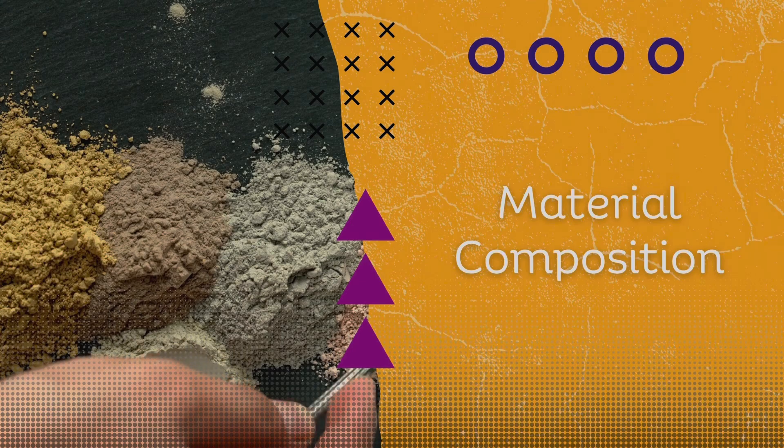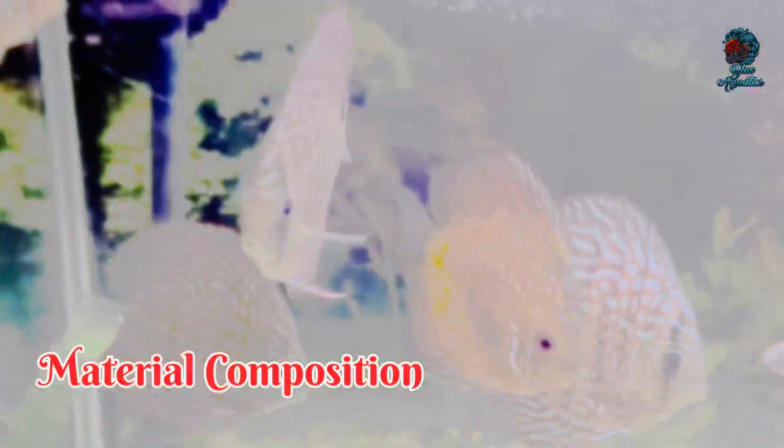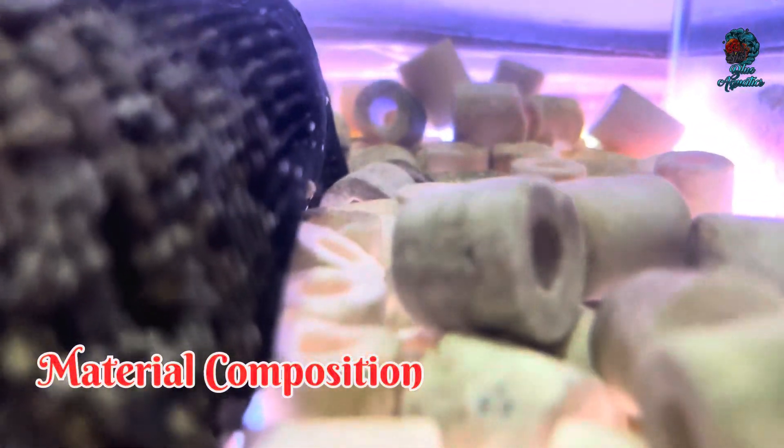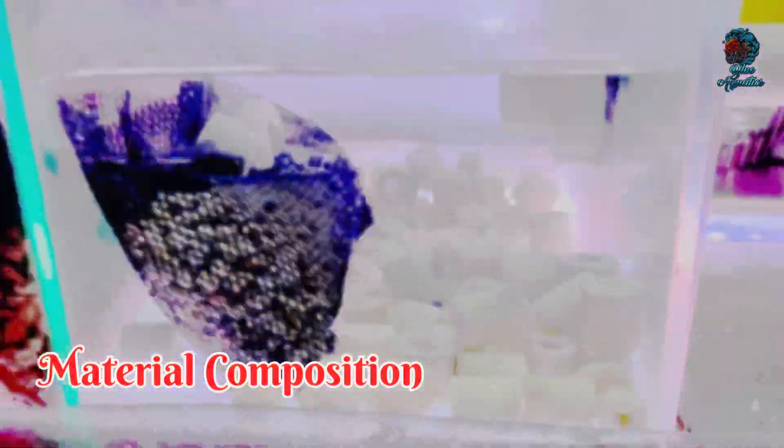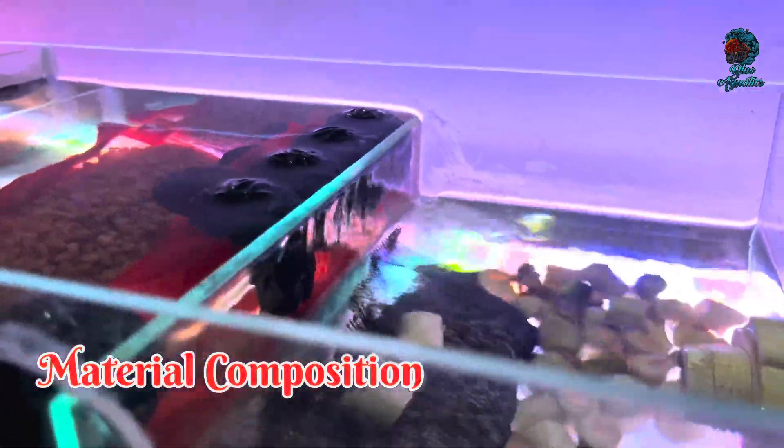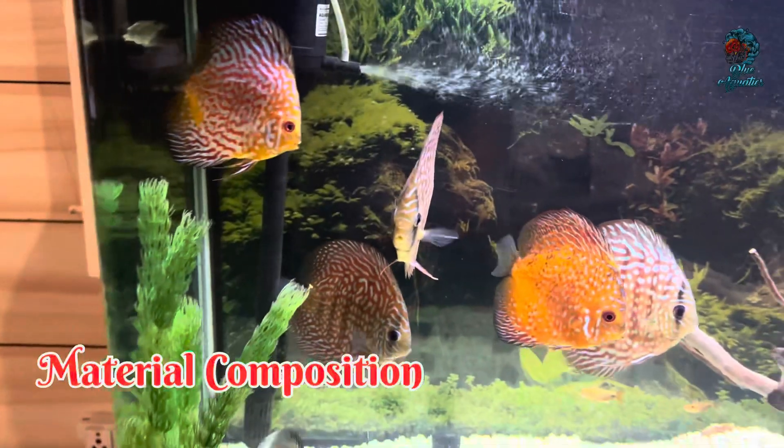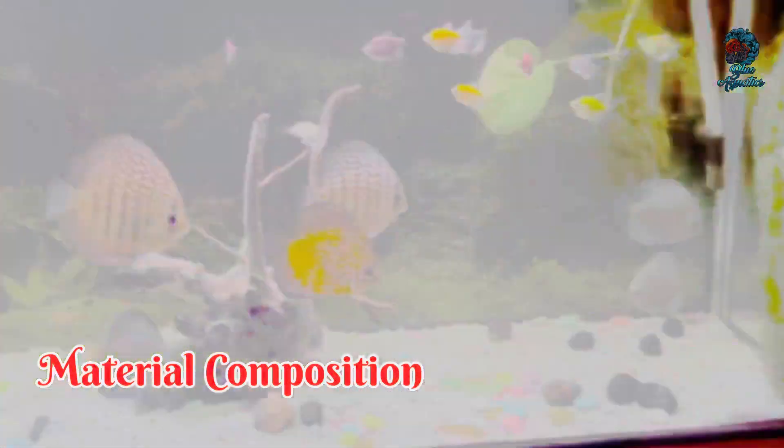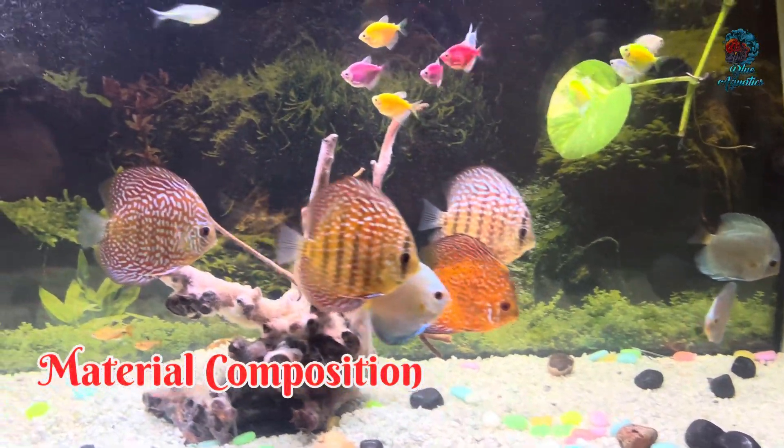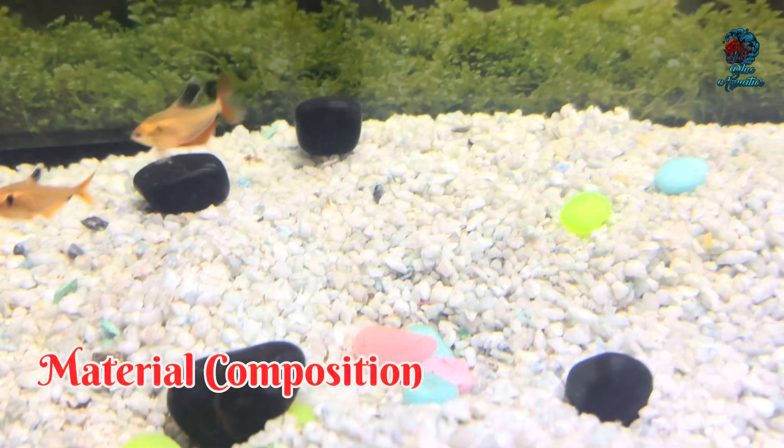Material composition. Another important factor is the material composition of ceramic rings and tank stones. Ceramic rings are typically made from sintered glass or ceramic materials that are highly porous and chemically inert. This means they are safe for use in your aquarium and do not alter the water chemistry. Tank stones, on the other hand, are often made from various types of rocks or artificial materials. These materials are not specifically designed for bacterial colonization and might leach unwanted substances into the water if they are not aquarium safe.